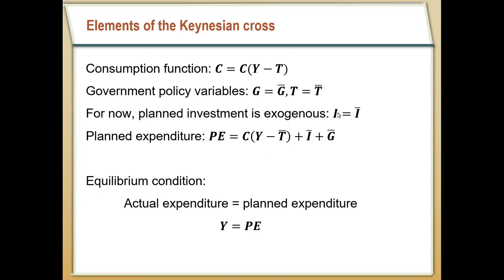The elements of the Keynesian Cross are exactly the same things that we had in chapter three. We're going to have a consumption function, and the consumption function is only going to be determined by disposable income, that Y minus T. We're also going to have completely exogenous government policy variables. We're not going to try to determine why the government spends the way it does or why it taxes the way it does. We're just going to let those be exogenous and focus on other elements of the model.